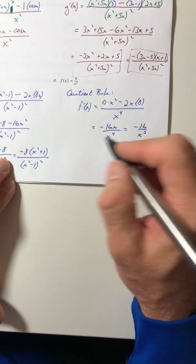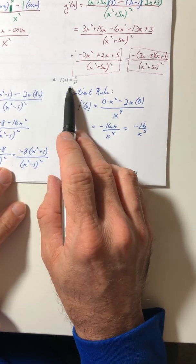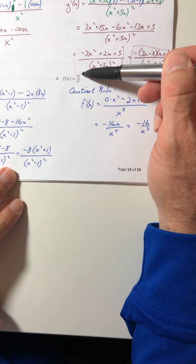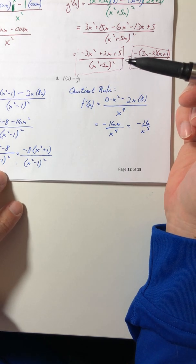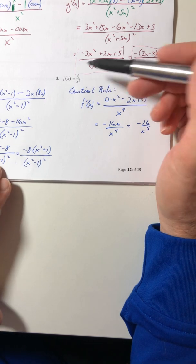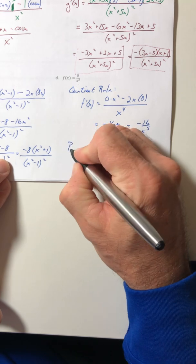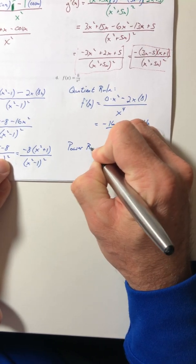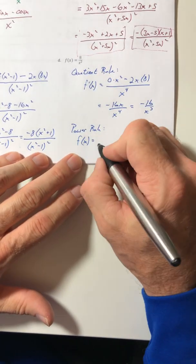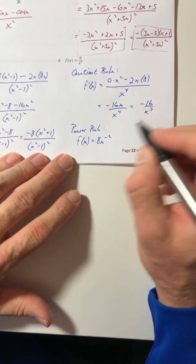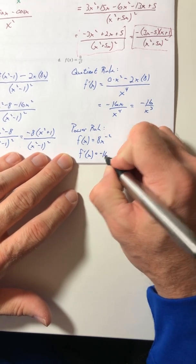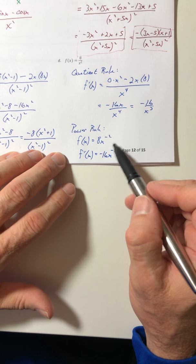But you could have done this problem before this section. Like this right here, we saw that in section 3.2, when we started using the power rule, because you can rewrite this function in a different way, and then the power rule would apply. So the function can be rewritten as 8x to the negative 2. And then the derivative, just negative 16x to the negative third. So you get the exact same result.